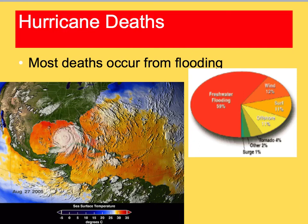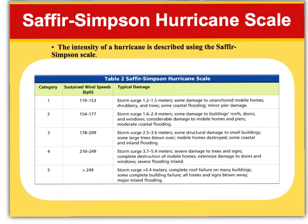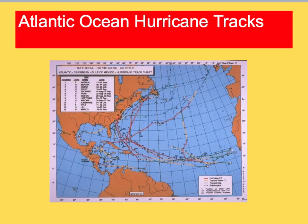Believe it or not, most hurricane deaths occur from flooding. Here is a picture of Hurricane Katrina. Most of the flooding comes from storm surge, which is the abnormal rise of sea level along the shore as a result of strong winds — it's most damaging at high tide. Hurricane intensity is measured using the Saffir-Simpson Scale, with actual measured wind speeds in categories one through five, and increasing storm surge with increasing categories, with five being the worst.